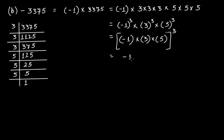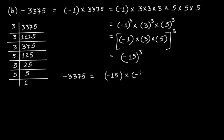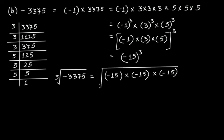This means minus 3375 can be written as minus 15 raised to the power of 3, that is minus 15 multiplied by minus 15 multiplied by minus 15. Therefore if you take the cube root of minus 3375, you get minus 15.